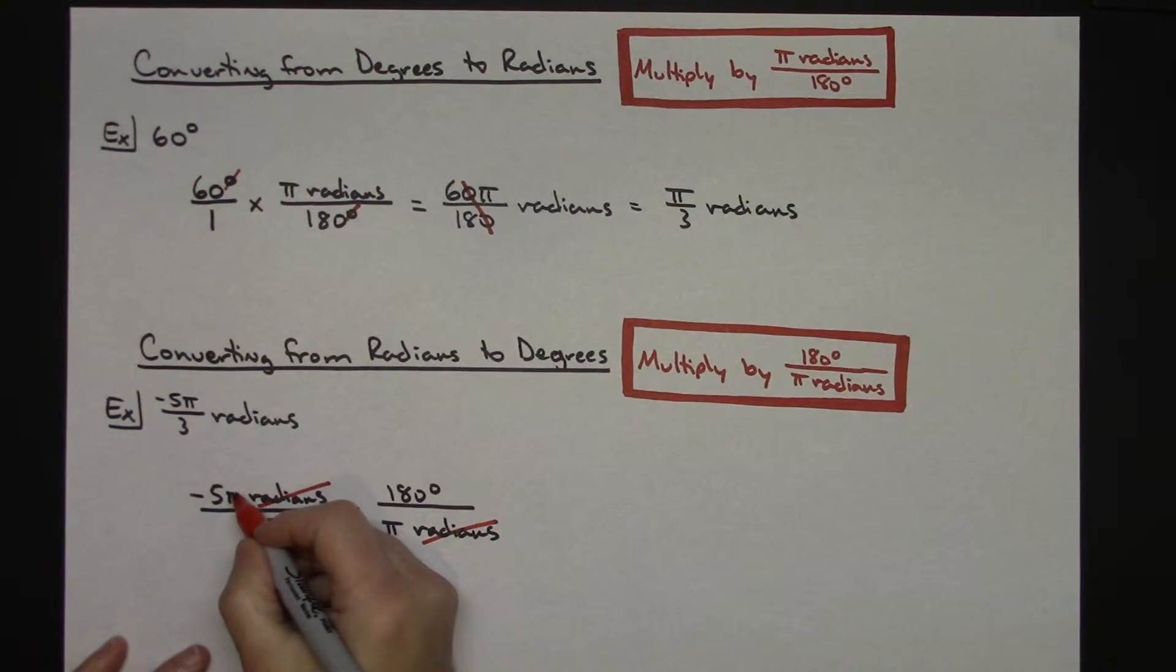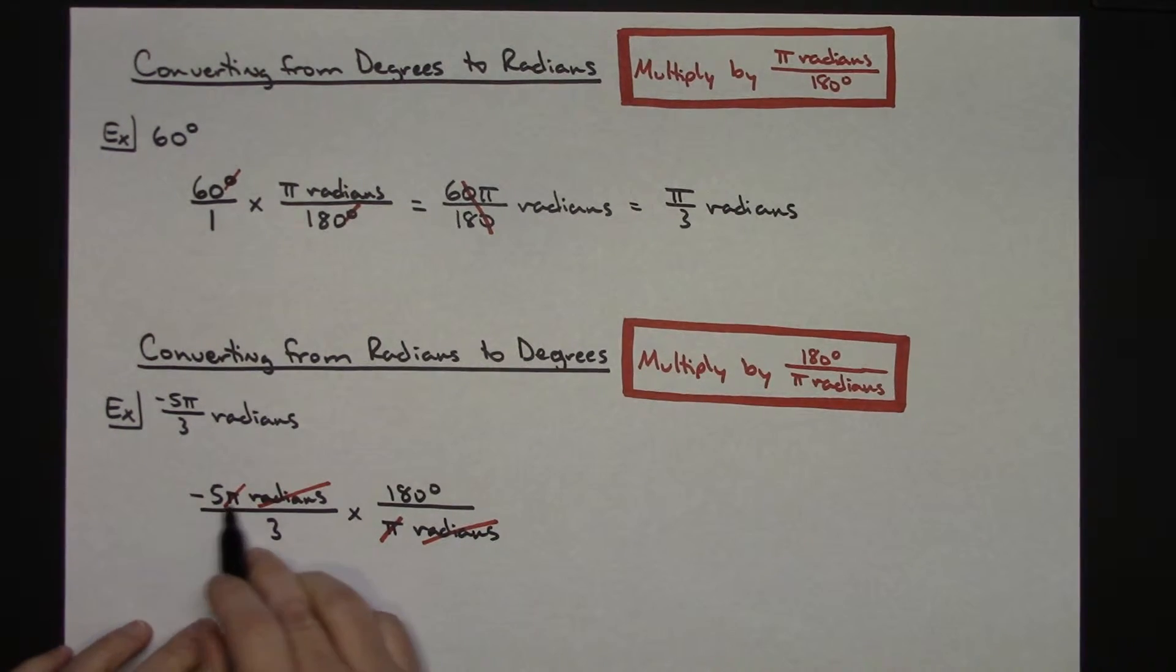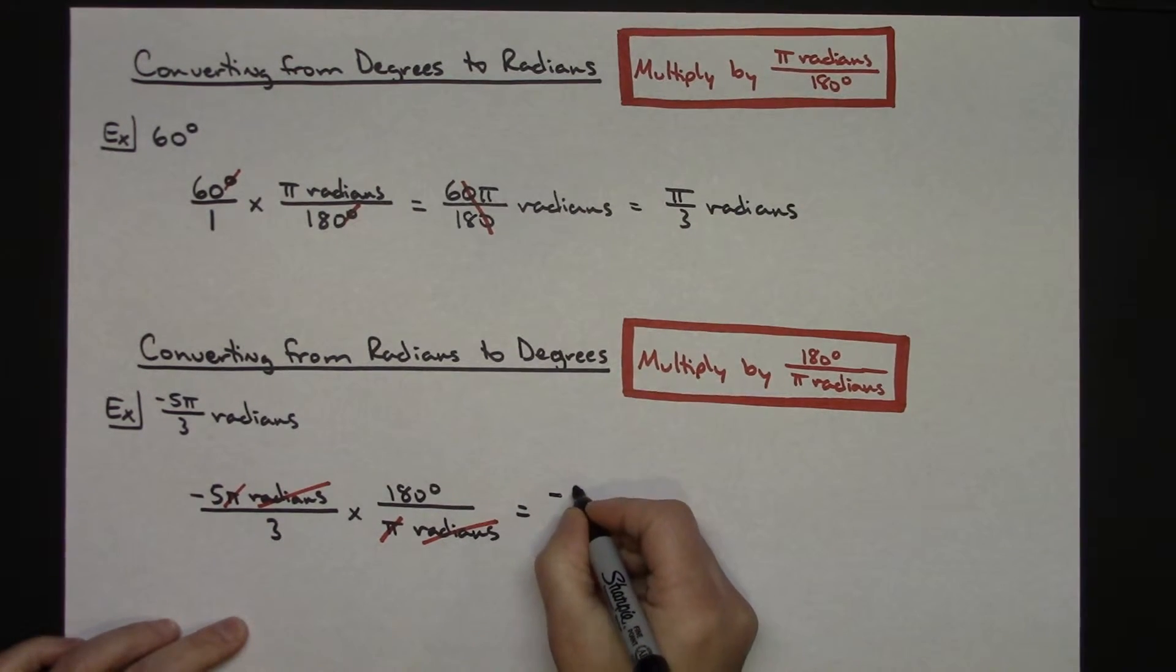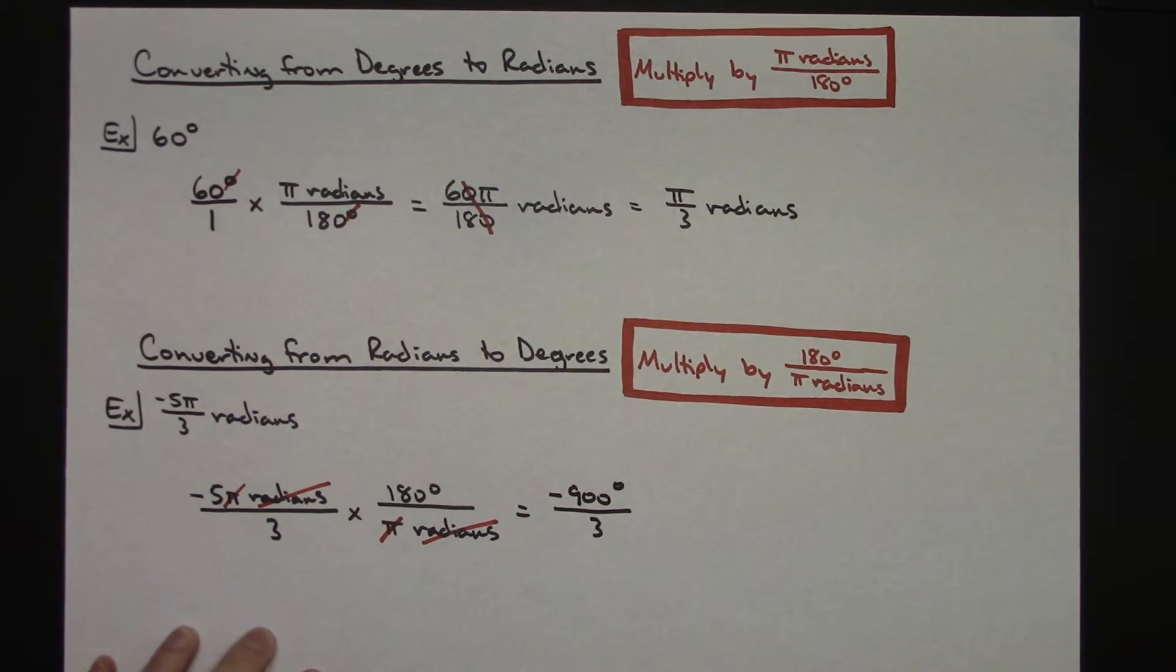I can also cross off the π's. So π and π crosses off, might as well go ahead and do that. At that point you can multiply straight across the top, straight across the bottom. That's going to give me a negative 900 and it is degrees over 3. Go ahead and divide that all the way out. I get a negative 300 degrees.